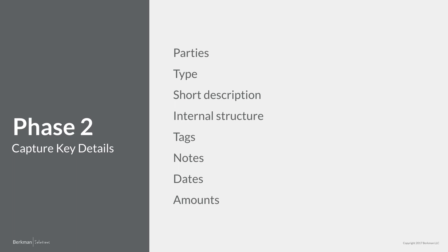Second, what type of contract is this? Choose the contract type from the classification list you created in phase one. For example, if the deal is a non-disclosure agreement, you would mark it as a confidentiality type. Next, consider a short description — a 5 to 15 word summary of each contract for easy reference. Also track internal structure: which legal entity in your corporate family is signing the contract. For instance, if ParentCo Inc. owns SubCoA and SubCoB, and SubCoB signs the contract, flag the contract as between SubCoB and the other party. This will help your reporting. Some organizations also like to track the department handling the contract.